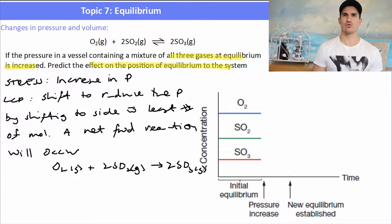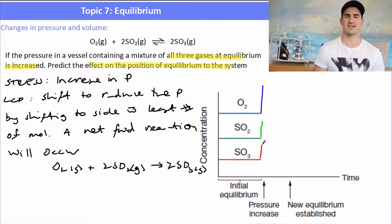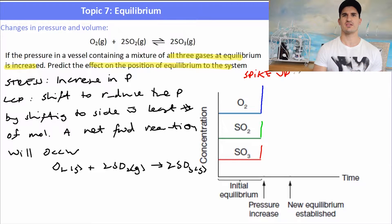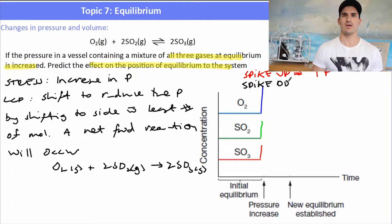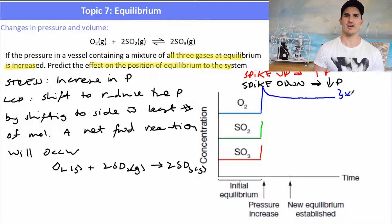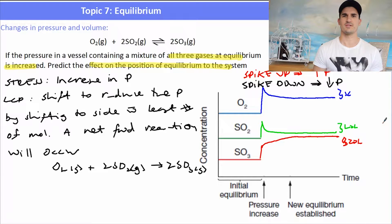In terms of the graph, if we've increased the pressure we've decreased the volume, so concentrations will increase proportional to how much there was at the start. We're going to see a spike up in all three concentrations — oxygen, sulfur dioxide, and sulfur trioxide. When the system tries to balance the equilibrium and the net forward reaction takes over, oxygen decreases by a factor of x, SO2 decreases by a factor of 2x, and SO3 increases by a concentration of 2x — proportional to their stoichiometric coefficients.